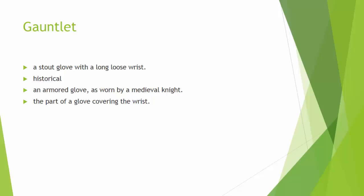Gauntlet. Gauntlet is a noun, and it means a stout glove with a long, loose wrist — like a thing that knights would put on their hand, an armored glove worn by a medieval knight. However, gauntlet also means a difficult endeavor. So you can say, like, 'I really ran the gauntlet this morning' — it was like a rough test. So be aware that it has two definitions.